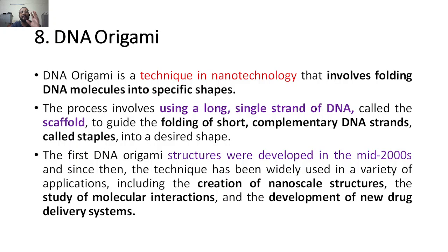Why is it called nanotechnology when we are already having a lot of technologies? Because of this size. And why is this size very important? Because this size plays a very crucial role. If any material falls less than 100 nanometer, they will tend to lose their bulk properties, but they become very excellent super properties. For example, a conductor less than 100 nanometer will become a superconductor.